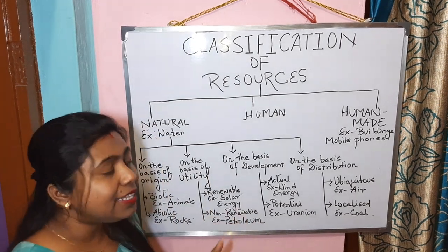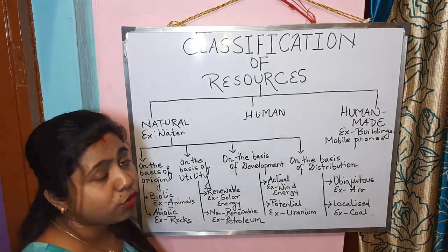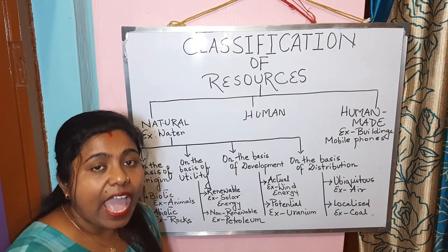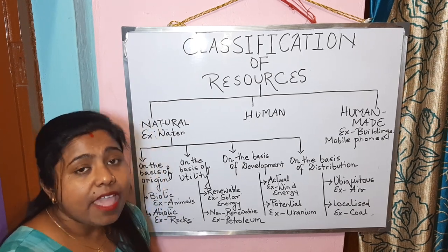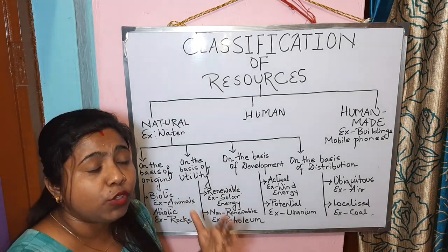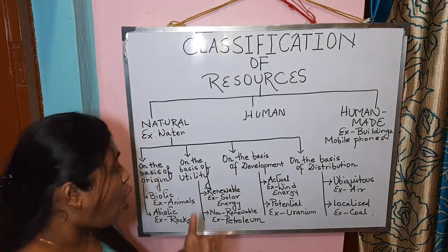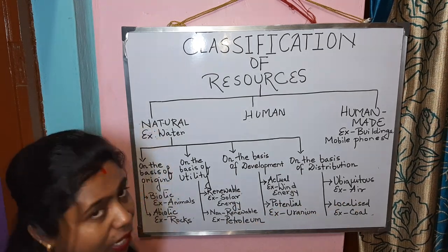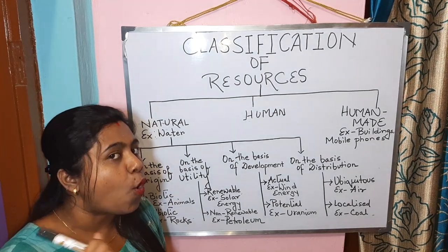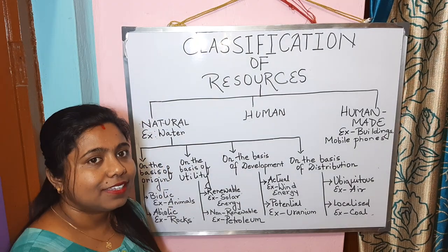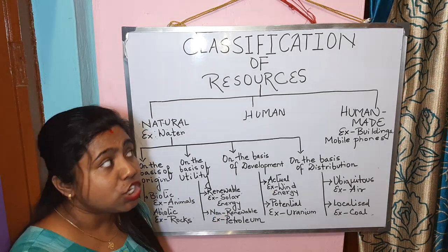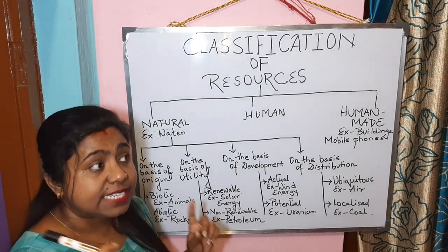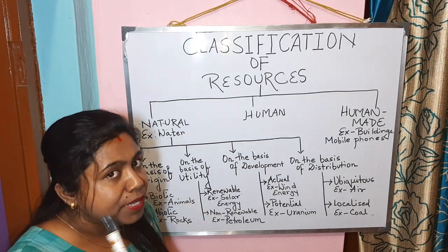I hope all of you understood the classification of resources. Until the next video, go through the classification and the concept of resources. I will provide you with a PDF along with assignments — in that module you will get the differentiation of biotic, abiotic, renewable, non-renewable, actual, potential, ubiquitous, and localized resources, along with some home assignments. Have a safe day and stay at home.